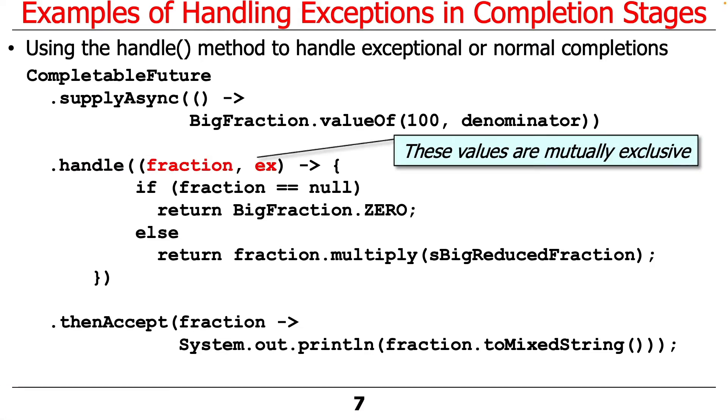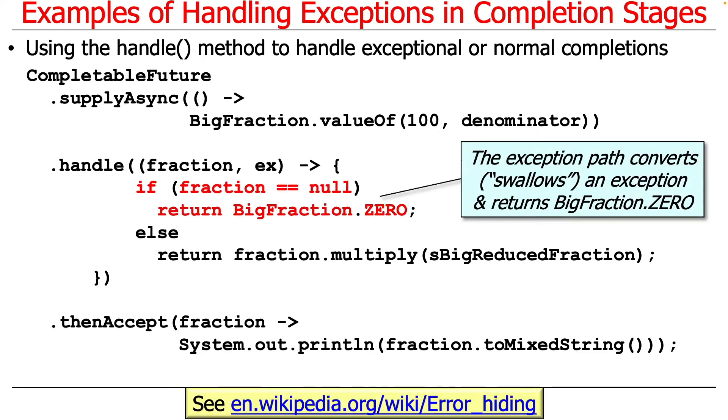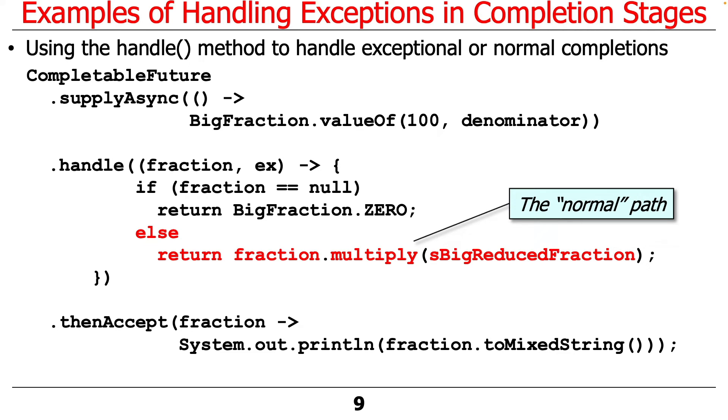It's passed two parameters, the result if all goes well and the other result if an exception occurred. These values are mutually exclusive. So if fraction equals null, that means that the exception occurred. In this case, all we're going to do is just return BigFraction.ZERO just to keep things going. It swallows the exception and will keep going, passing a zero back. Is that a good idea? Maybe not, but that's what we're doing here just to illustrate how this works. Otherwise, if all went well and fraction was non-null, then we multiply the fraction by some constant. That's the normal path, and that will continue to percolate up.